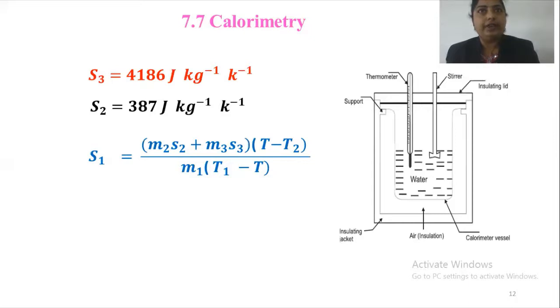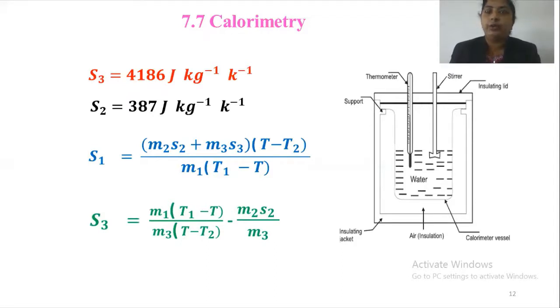One can find the specific heat capacity of water or any liquid using the expression if the specific heat capacity of the calorimeter material and sample is known. S3 equals M1 S1 into T1 minus T upon M3 into T minus T2 minus M2 S2 upon M3.